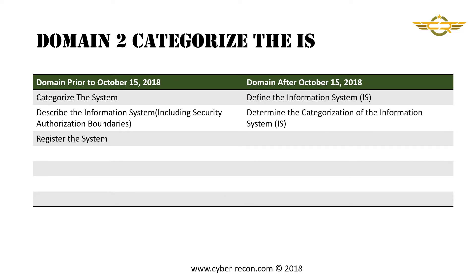The second domain is modified slightly, going from 3 subject areas to 2 subject areas. Before October 15, the subject areas are: categorize the system, describe the information system including the security authorization boundaries, and register the system. After October 15, the subject areas are: define the information system and determine the categorization of the information system.